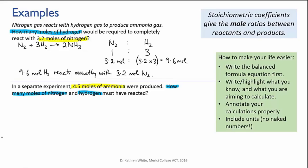This looks like we're working backwards, but because it's all about ratios, it doesn't actually matter whether we're using reactants to find products or vice versa. So we look at the mole ratios again from the equation. It's one mole of nitrogen is to three moles of hydrogen is to two moles of ammonia. And the actual amount of ammonia that we have is 4.5 moles.